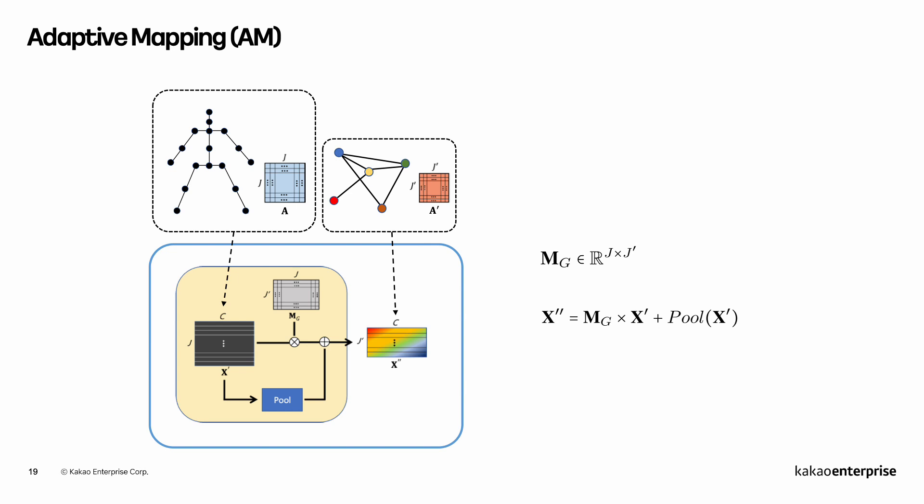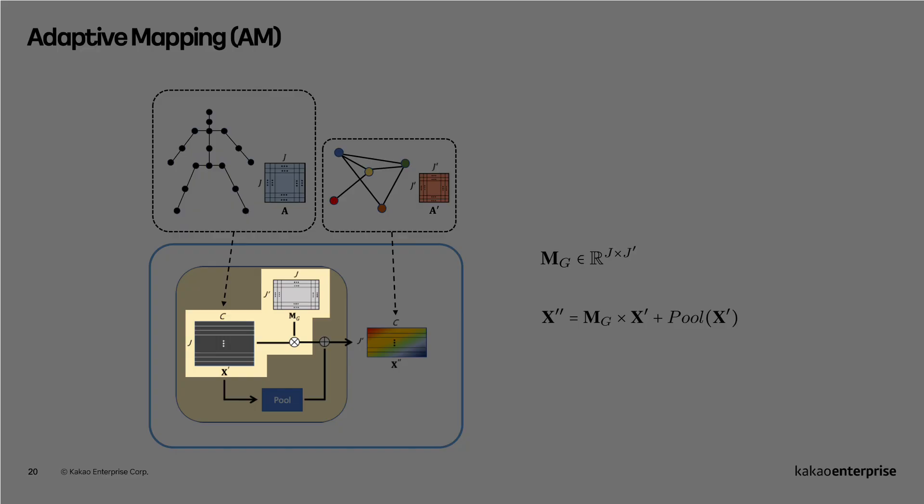AM module tries to map the joint features to a lower-dimensional space without using any prior knowledge. That is, we train a mapping matrix Mg which has the size of J times J' to reduce joint space. The whole process of AM is almost same with the MM module except that the joint features are multiplied with Mg.